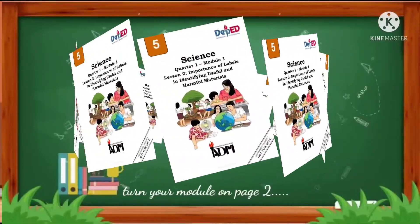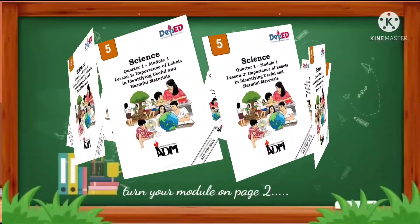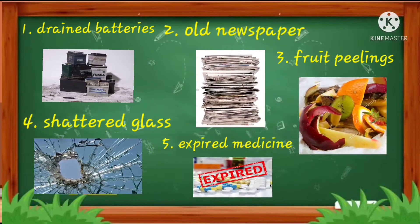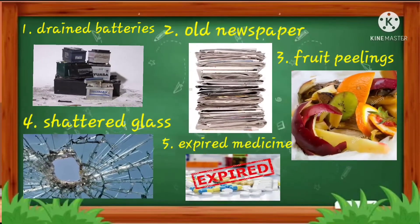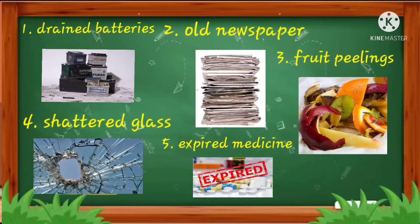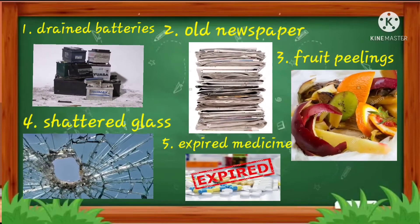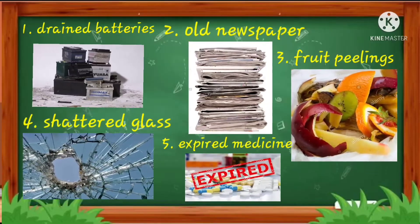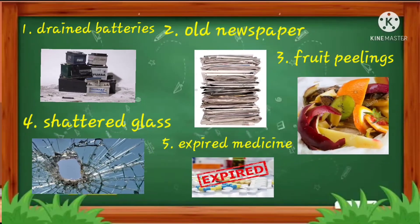Now turn your module to page 2. What's In? Direction: Identify the following whether the material is useful or harmful. Write U for useful or H for harmful. Number 1: Dead batteries. Number 2: Old newspapers. Number 3: Fruit peelings. Number 4: Shattered glass. Number 5: Expired medicine.